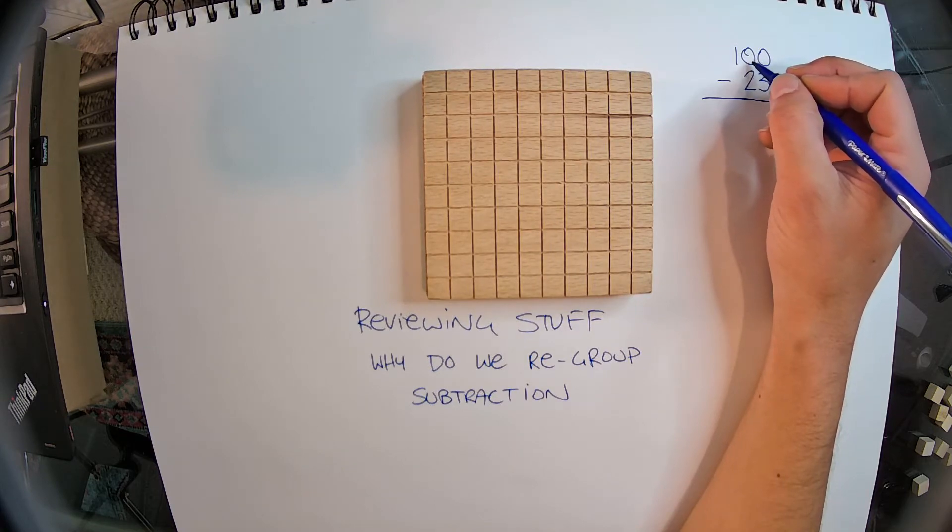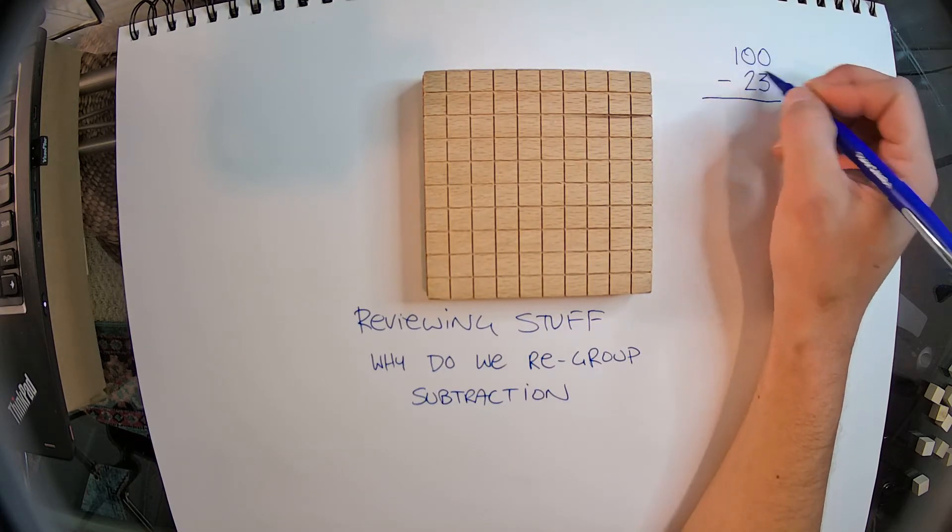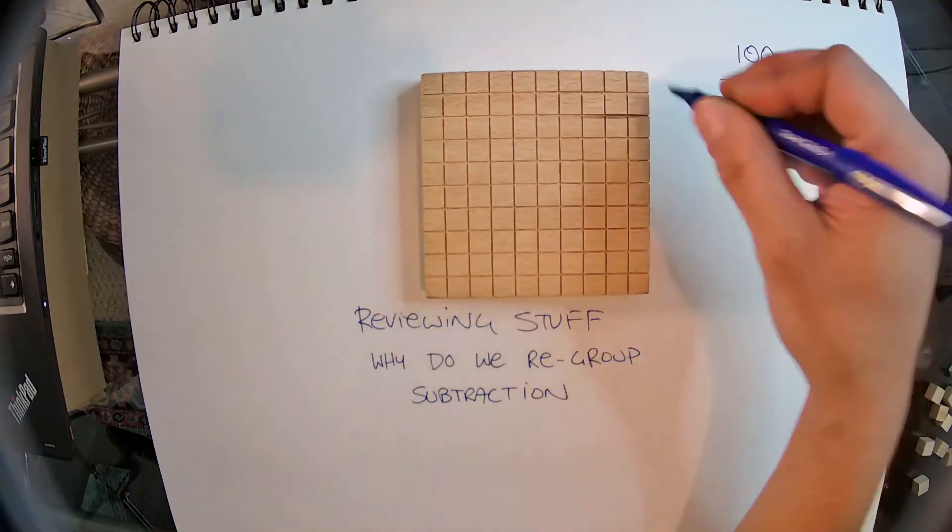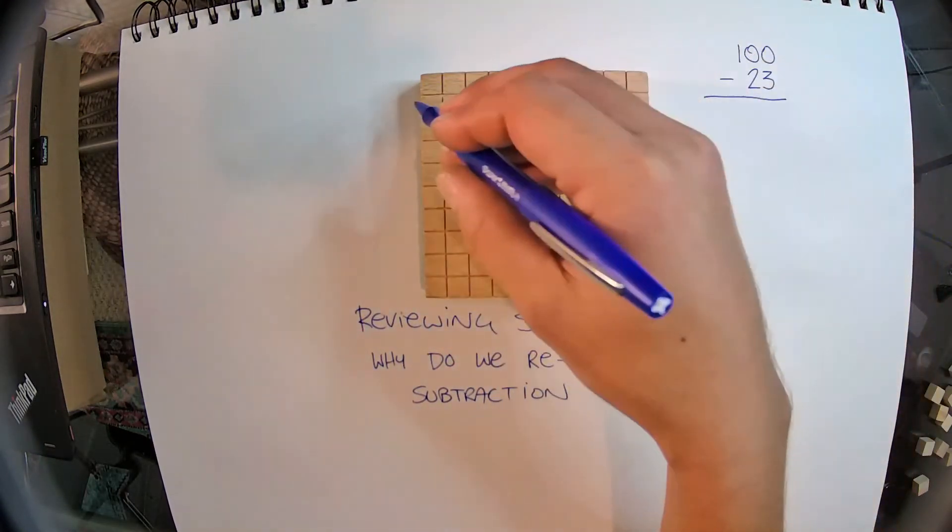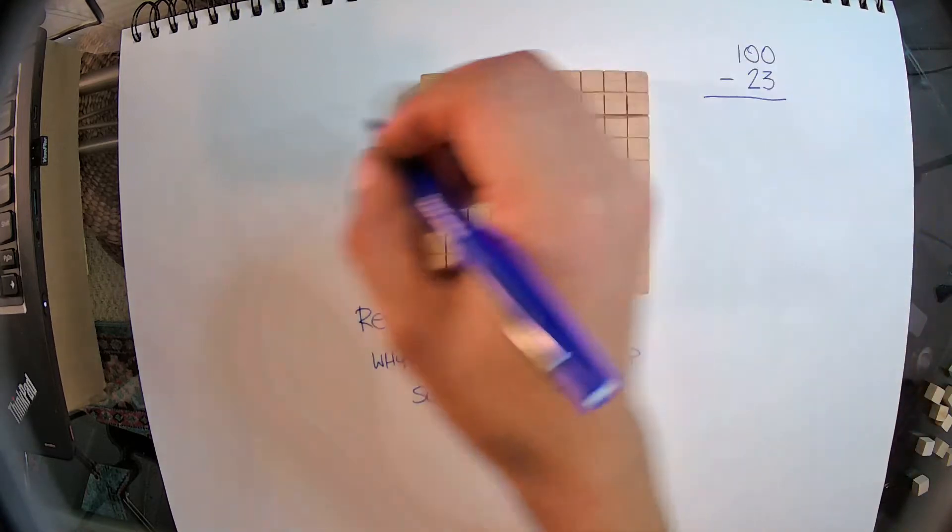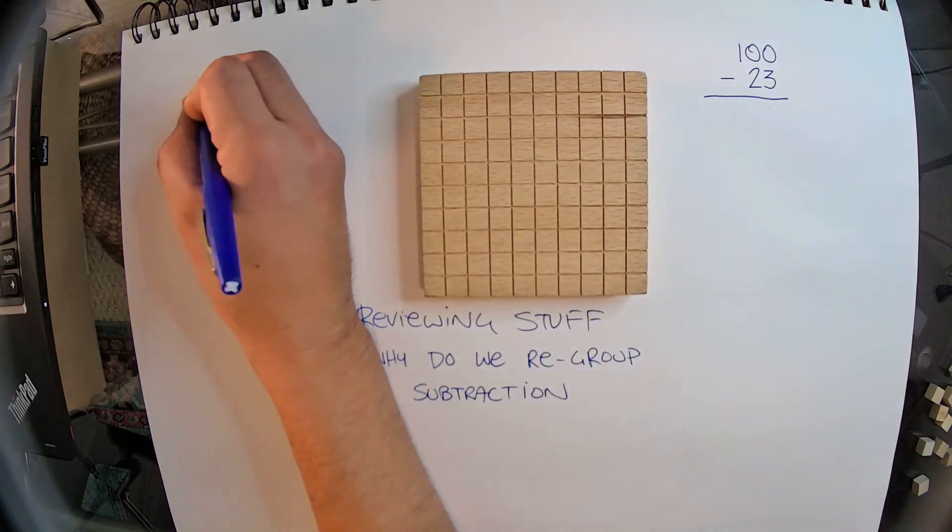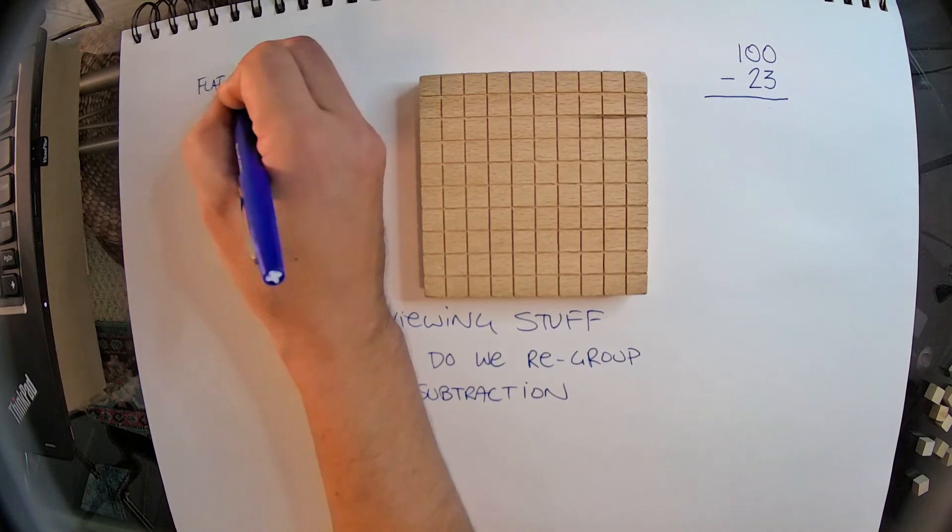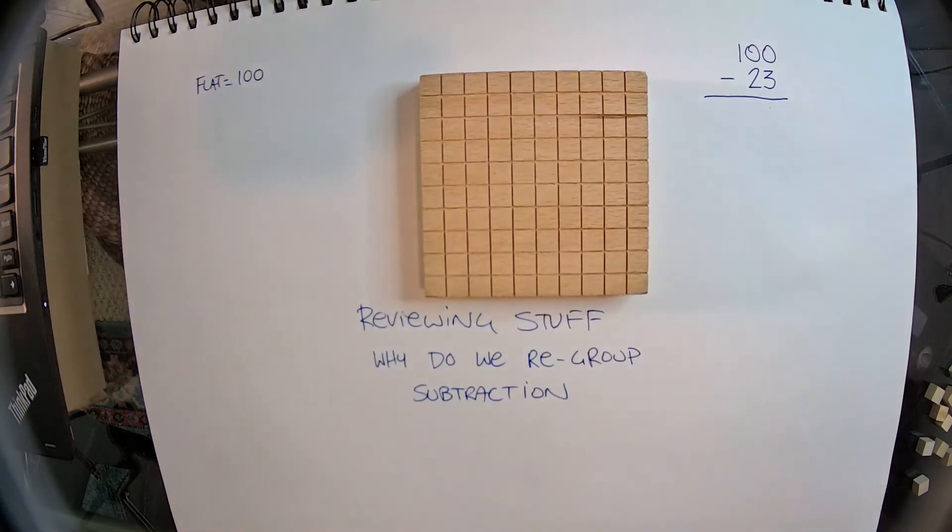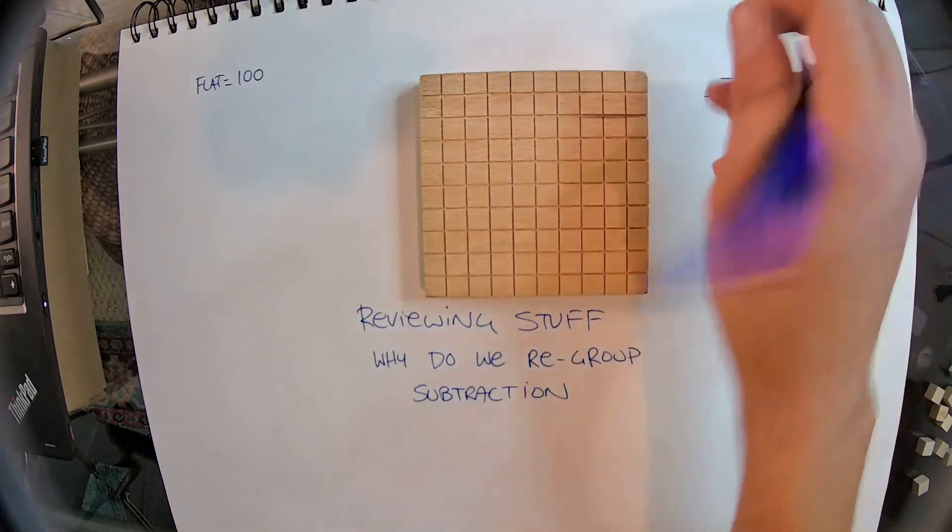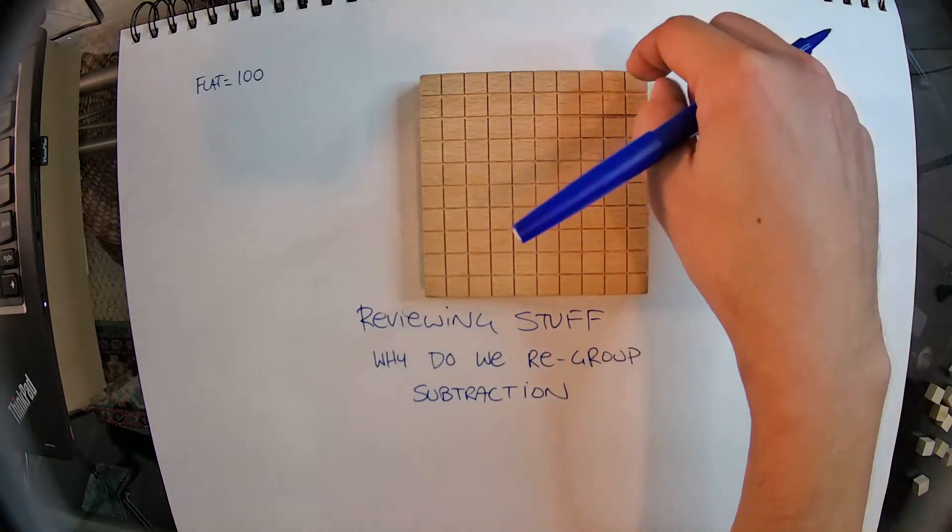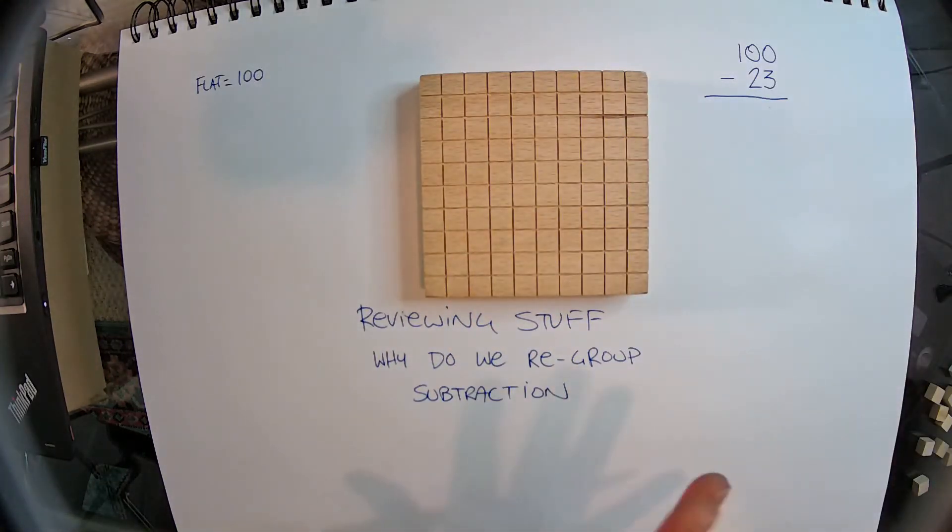When we're borrowing from next door, all we're doing is breaking up this 100 into pieces that we can use. So this is 100, a flat. One of these, when we're dealing with whole numbers, equals 100. So right now, can I just take 3 away? I can't just take 3 away from here, can I? So what do I have to do?